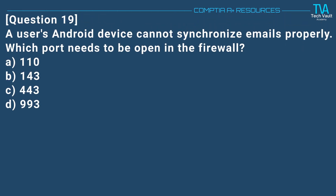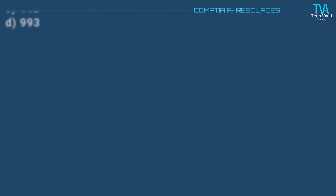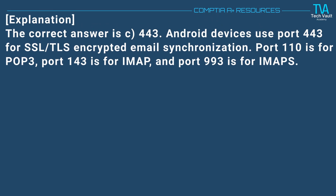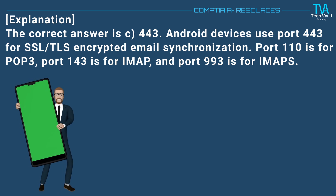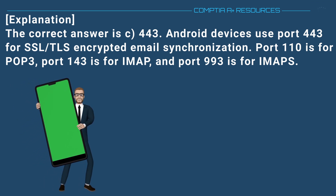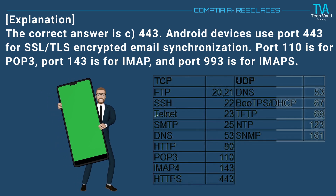Question 19. A user's Android device cannot synchronize emails properly. Which port needs to be open in the firewall? A. 110. B. 143. C. 443. D. 993. The correct answer is C. 443. Android devices use port 443 for SSL/TLS encrypted email synchronization. Port 110 is for POP3, port 143 is for IMAP, and port 993 is for IMAPS.